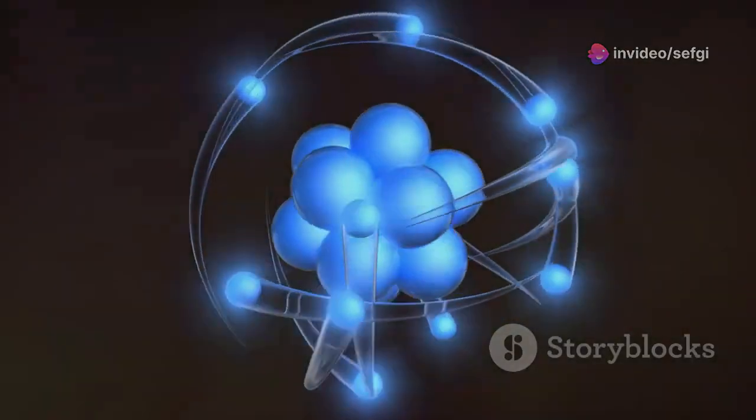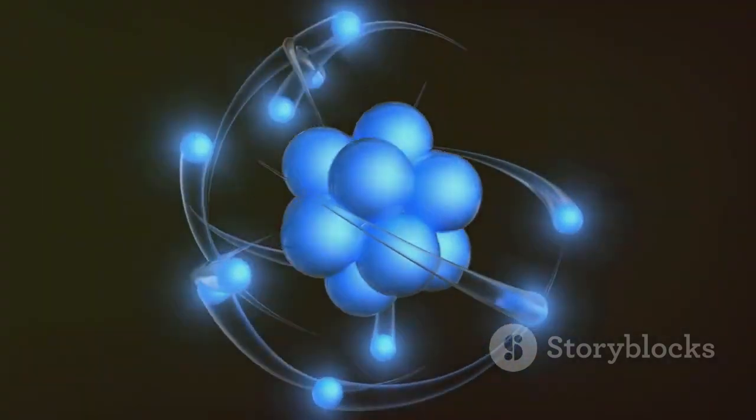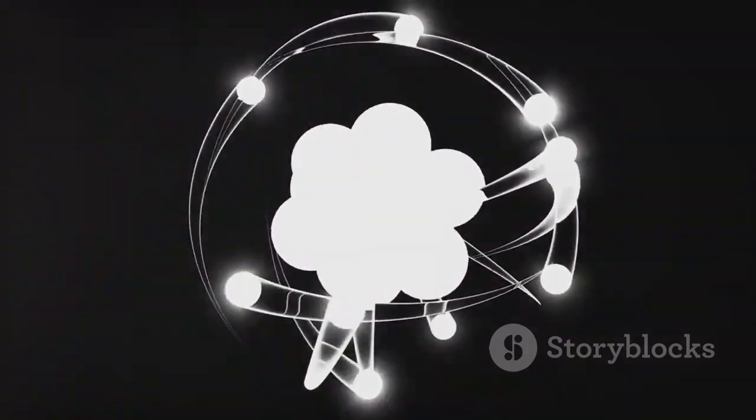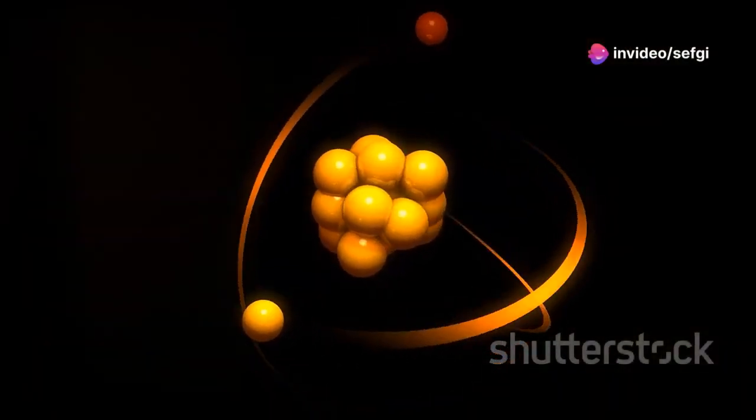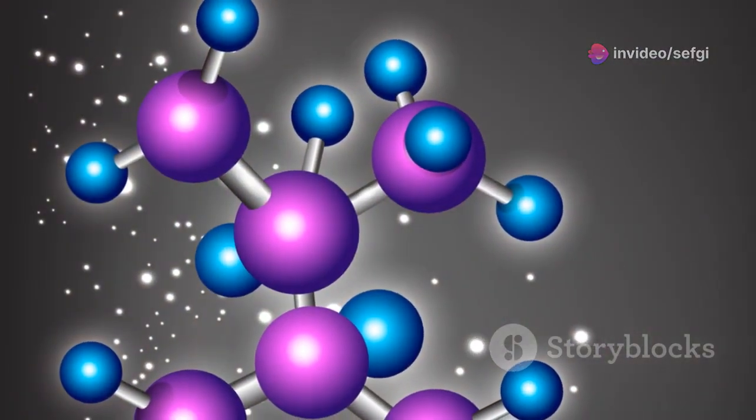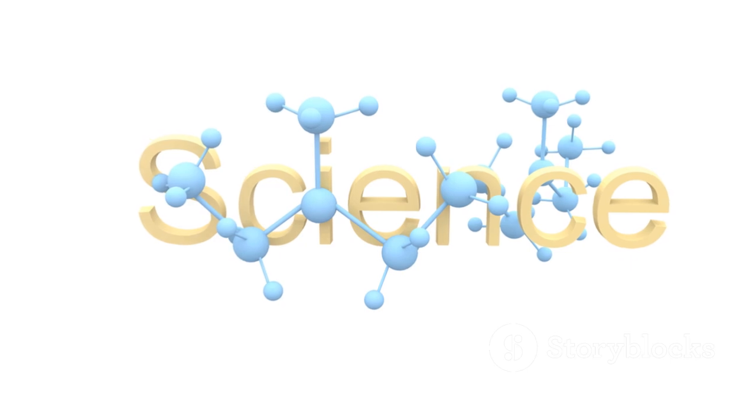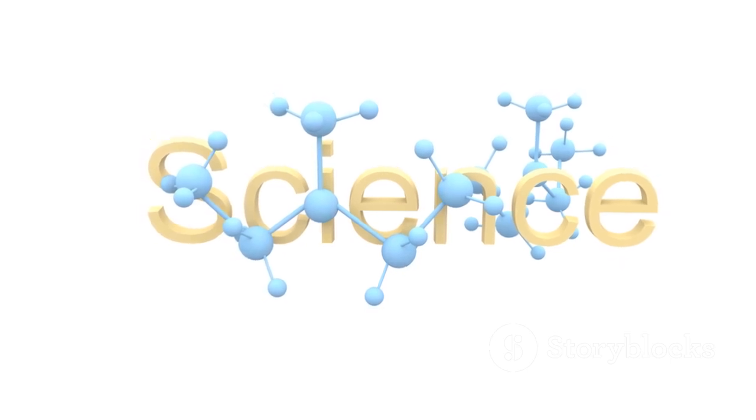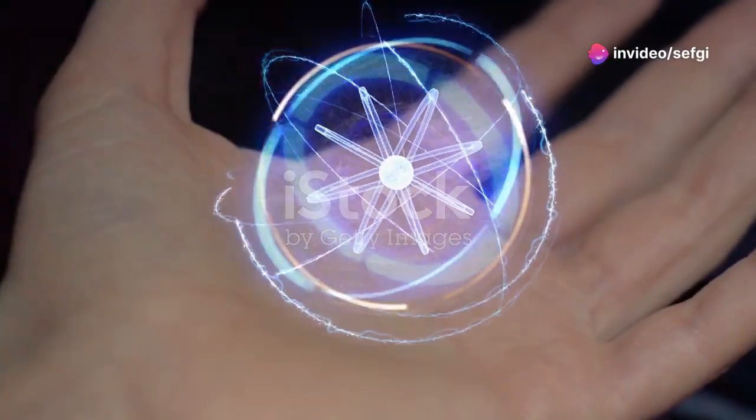Electrons, much smaller than protons and neutrons, orbit the nucleus at incredibly high speeds. These electrons are held in place by the electromagnetic force, creating a dynamic and complex structure. This structure with its tiny whirling particles determines the atom's properties and how it interacts with other atoms.